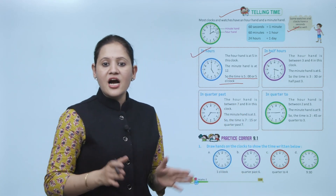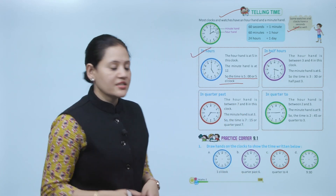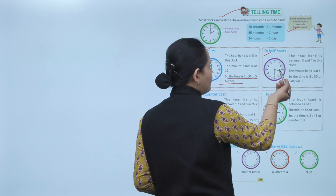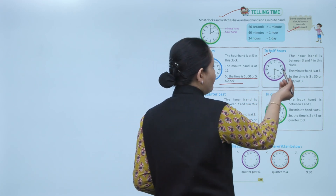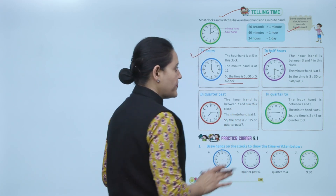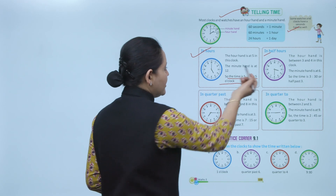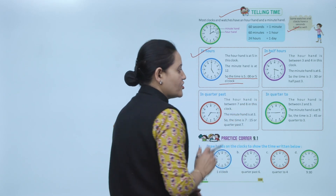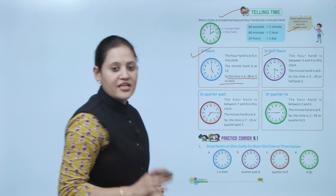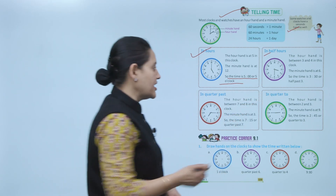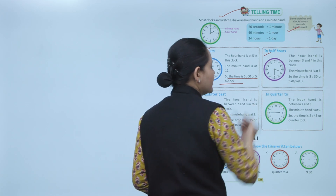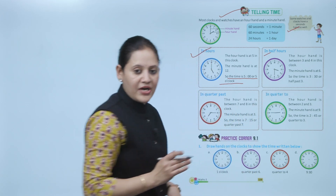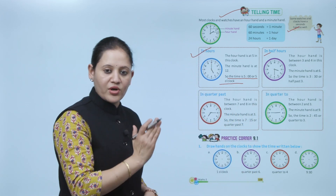For half hours: in this clock the hour hand is between 3 and 4, and the minute hand is on 6. So we can write the time as 3:30, or half past 3. Half past means 30 minutes have passed.